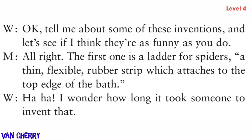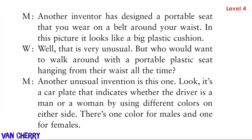All right — the first one is a ladder for spiders: a thin, flexible rubber strip which attaches to the top edge of the bath. I wonder how long it took someone to invent that! Another inventor has designed a portable seat that you wear on a belt around your waist — in the picture it looks like a big plastic cushion.